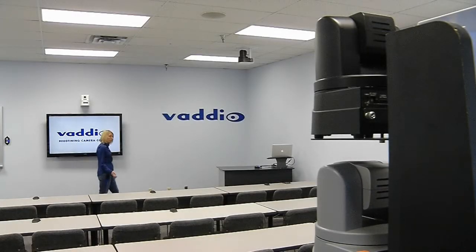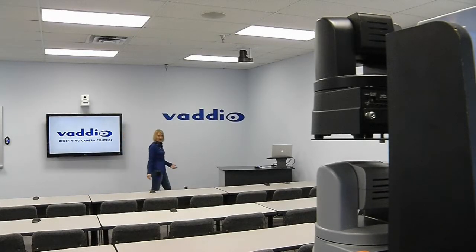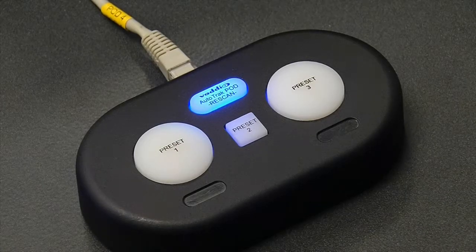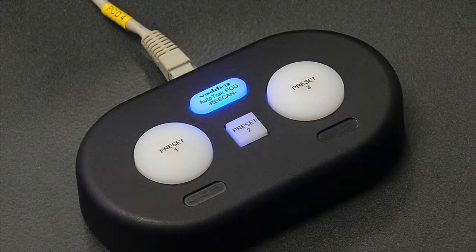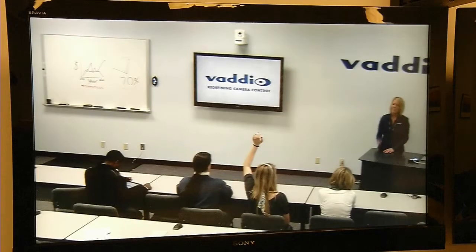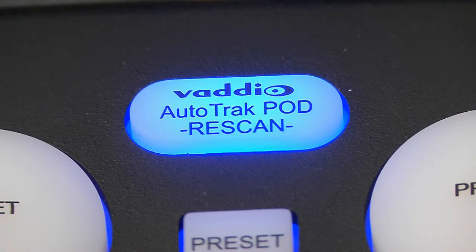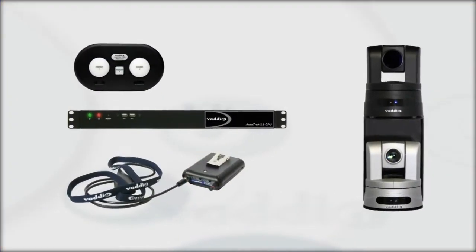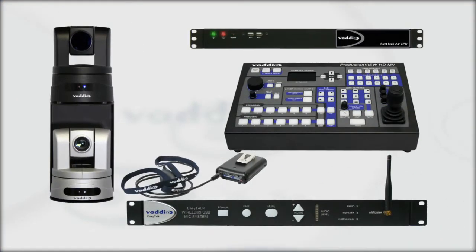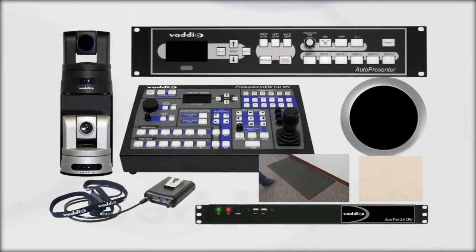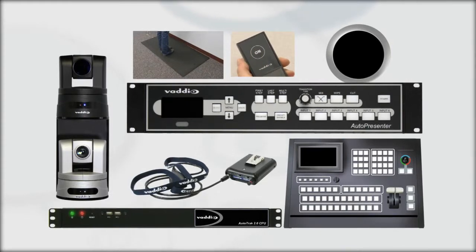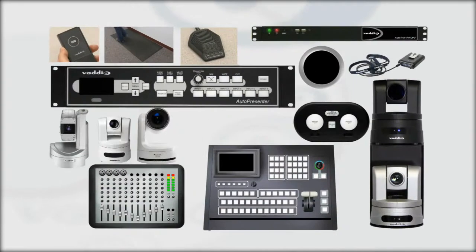If you only want to use the tracking system but need some other type of control using presets, AutoTrack 2.0 comes equipped with a device called the AutoTrack Pod. This device gives the presenter the ability to select up to three tracking camera preset positions, and a rescan button for fast reacquisition if the lanyard loses the presenter in the shot. The greatest thing about Vadio products is they all work together no matter what the application. You can build an entire presenter control system with all Vadio devices, or choose individual pieces to integrate into a system design by simply adding a Vadio switcher and triggers.